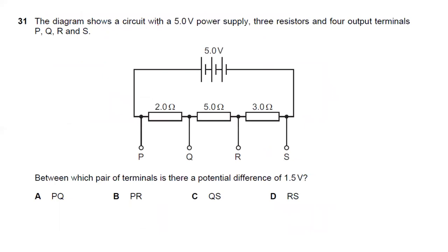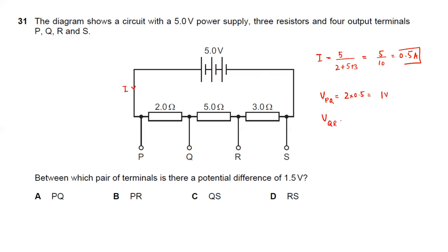Question thirty-one: a circuit has a 5 V supply with three resistors of 2 Ω, 5 Ω, and 3 Ω in series (terminals P, Q, R, S). Total current = 5/10 = 0.5 A. Voltage across PQ = 2 × 0.5 = 1 V; QR = 5 × 0.5 = 2.5 V; RS = 3 × 0.5 = 1.5 V. The pair with 1.5 V is RS. Answer D is the right choice.